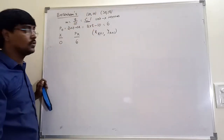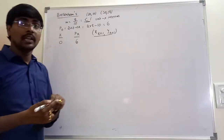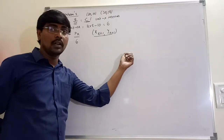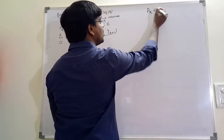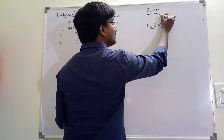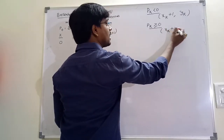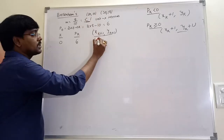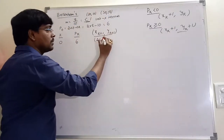P0 value is greater than 0. When pk value is less than 0, the next coordinate is (xk+1, yk). When pk is greater than or equal to 0, the next coordinate is (xk+1, yk+1). Since p0 is greater than 0, xk+1 is 20 plus 1 equals 21, and yk+1 is 11. So the next coordinate is (21, 11).